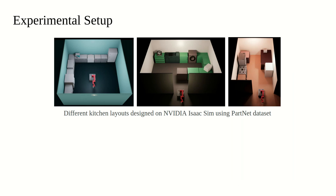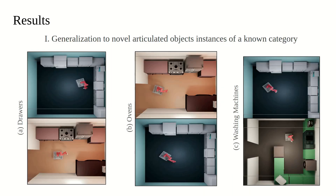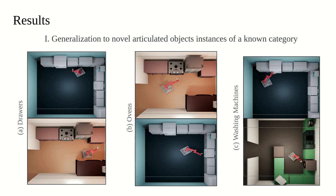In our experiments, we designed three different kitchen layouts in NVIDIA Isaac Sim. We consider the object categories: drawers, ovens, and washing machines. Our method can interact with these objects in various rooms successfully. While manipulating the object, the whole-body planner ensures tight coordination between the base and the arm to prevent collision with obstacles in the scene.